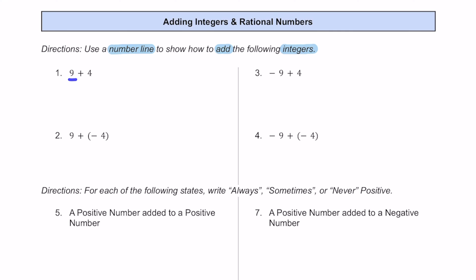For number 1, we have a positive 9 plus a positive 4. Start off by drawing a number line. As we go to the left, this is going towards negative infinity. As we go towards the right, this is going to be positive infinity.